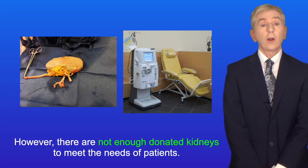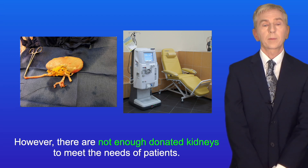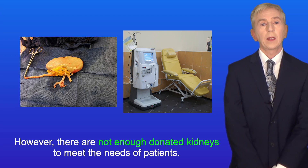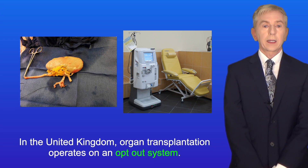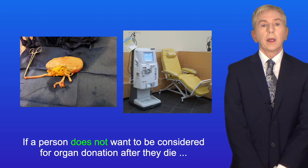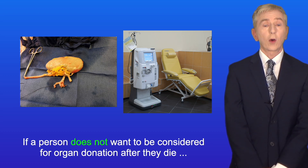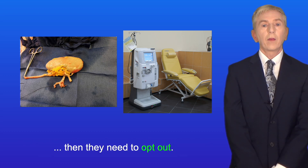However, there are not enough donated kidneys to meet the needs of patients. In the United Kingdom, organ transplantation operates on an opt-out system — if a person does not want to be considered for organ donation after they die, then they need to opt out.